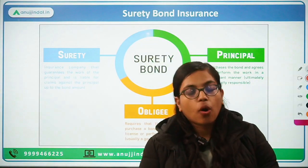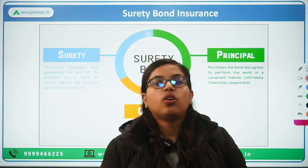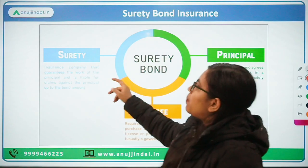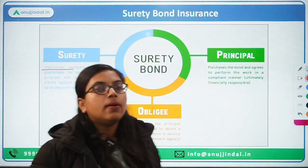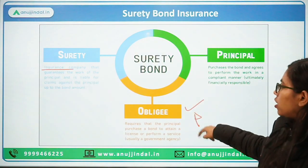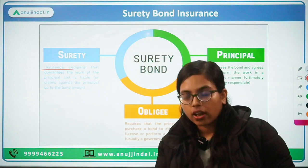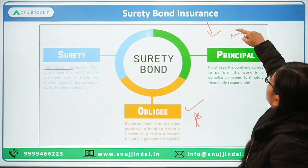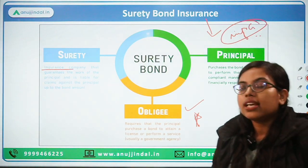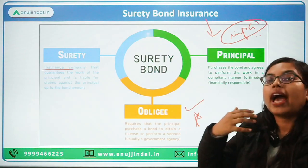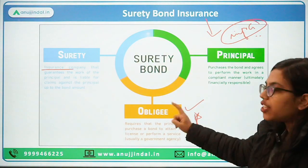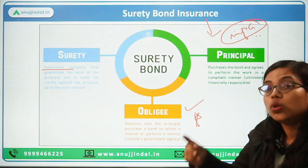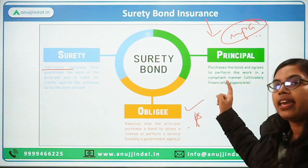In case of a surety bond insurance, it is basically a contractual obligation or a contract between three parties. There is a surety — who provides the guarantee and is the insurance company. Then we have the obligee — usually a government company that gives the contract. And we have the principal — the contractor who takes up the contract and fulfills its obligations. This surety bond insurance will be used specifically for infrastructure projects such as constructing highways or roads.